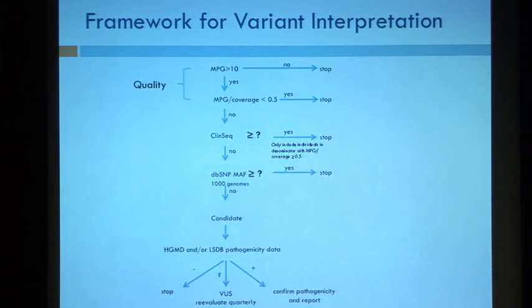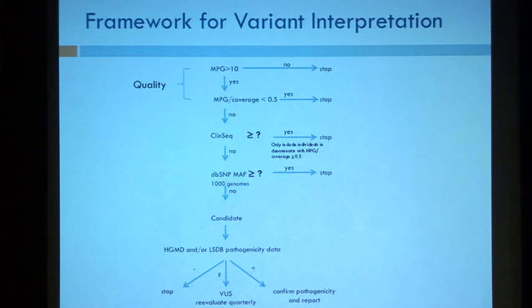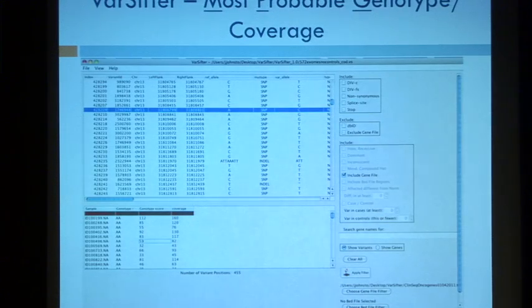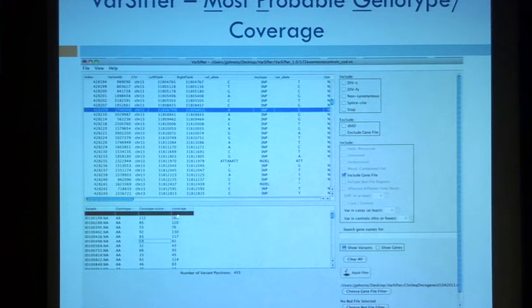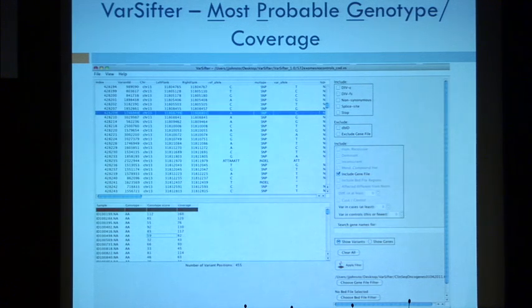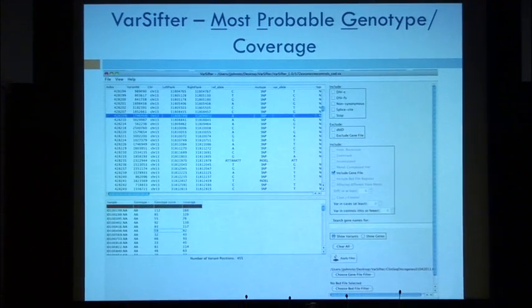Once you have this smaller list of variants you have to start filtering. VarSifter already filters based on the most probable genotype score — if the genotype score isn't 10 or greater, it's not even included. The next thing we do is look at the MPG score compared to the coverage; empirically, a ratio of 0.5 has been determined as the quality score threshold. You can break out individuals by genotype, and any individual that did not pass the MPG coverage quality filter gets highlighted — if it's the only individual with that variant, the variant can be thrown out.